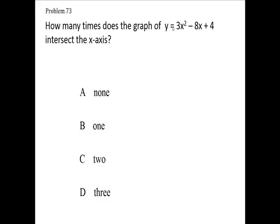How many times does the graph of this quadratic equation, y equals 3x squared minus 8x plus 4, intersect the x-axis? Let's write that trinomial down and factor the trinomial. We have a choice of it doesn't intercept at all, once, twice, or three times. How many times does it intercept the x-axis?